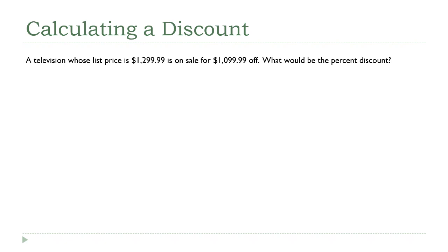I have a question here about discounts. Instead of being given the percentage, we're given the before and after price, and we're asked to figure out what the percentage of the discount was. The way we would normally calculate a discount if we were given a percentage is: the percent of the list price equals the amount off of the list price.